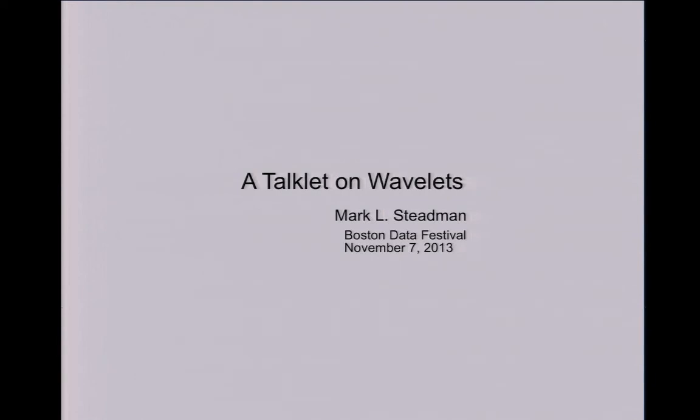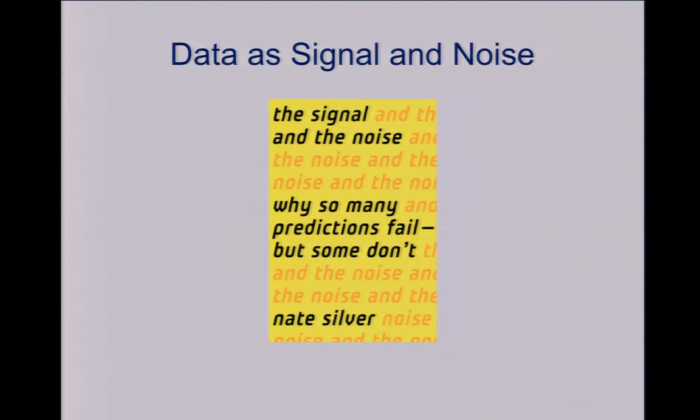So when you're looking at data, we want to figure out a signal in it, something we can take with us. Separate the noise, find some signal. Quite often the signal is compact because data is redundant, or it's some feature we're particularly interested in. Wavelets and Fourier transforms are a way to do this.